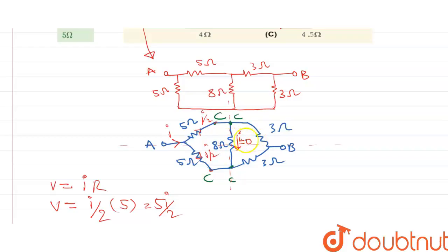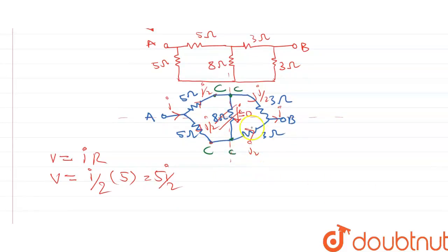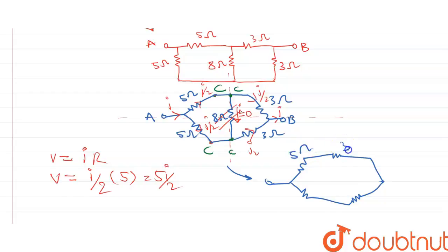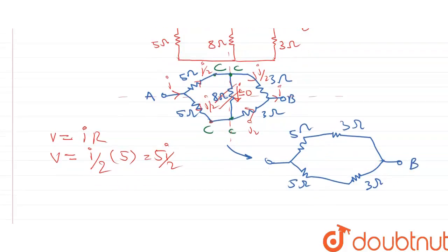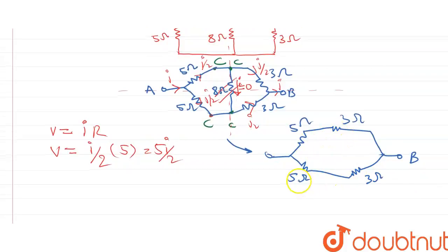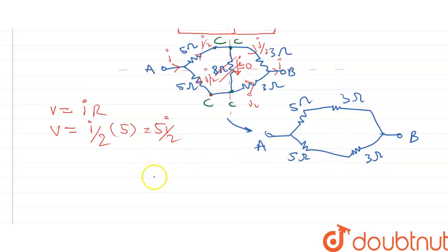No current will flow through the 8 ohm resistor, so we can neglect it in the circuit. Simply I/2 will flow in each branch. The simplified circuit now has 5 ohm and 3 ohm in series on each branch, giving 8 ohm per branch. We can neglect the 8 ohm resistor since current through it is zero. Adding 5 plus 3 we get 8, and we also get 8 on the other side. These two 8 ohm resistors are in parallel, so the resistance between A and B is 8 by 2, which equals 4 ohm.